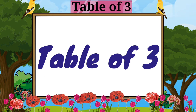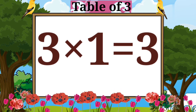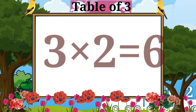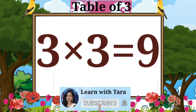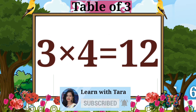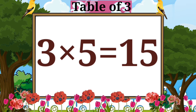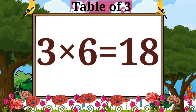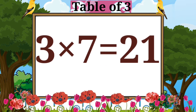Table of three. Three ones are three. Three twos are six. Three threes are nine. Three fours are twelve. Three fives are fifteen. Three sixes are eighteen.